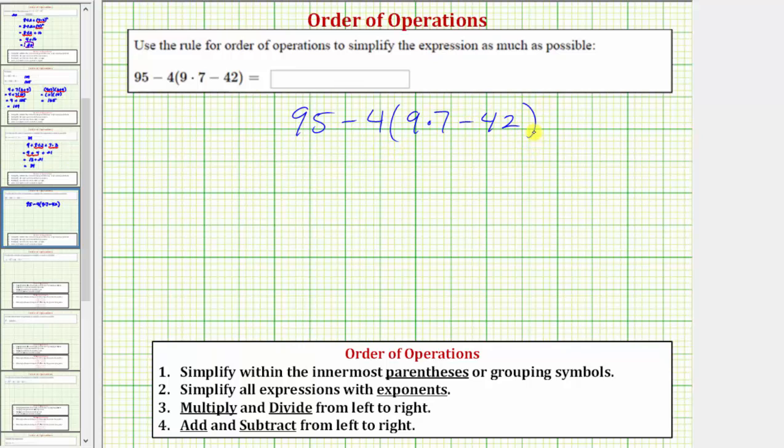Looking at the order of operations, the first step is to simplify within the innermost parentheses or grouping symbols. Our first step is to simplify inside the parentheses here, but notice inside the parentheses we have multiplication as well as subtraction.